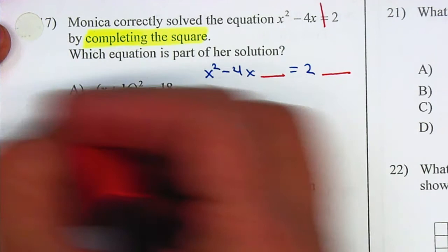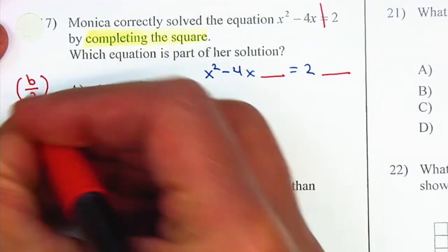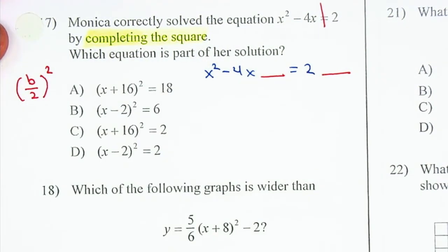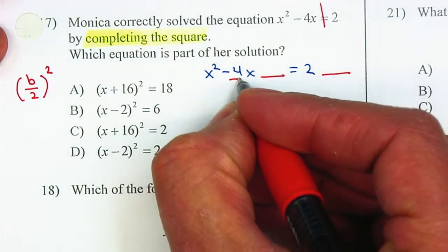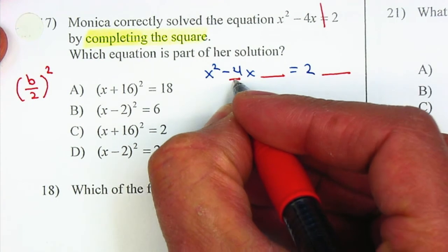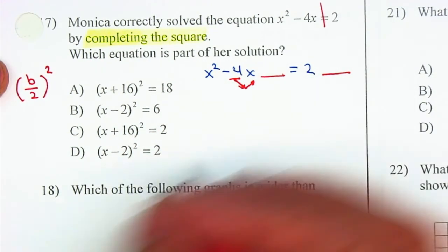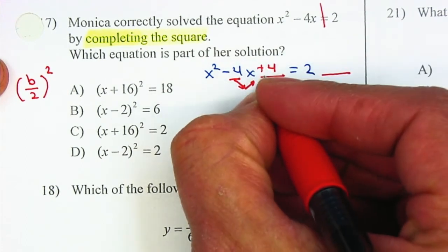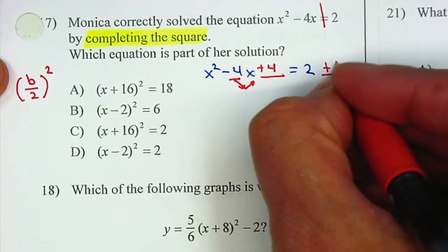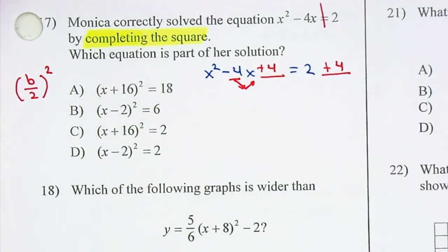The formula for completing the square is b over 2, squared. We can just do it quickly in our head. We just take half of negative 4, which is negative 2, and then we square it. Negative 2 squared is positive 4. Remember, if you add positive 4 here, you need to add a positive 4 on the right. You need to add the same thing on both sides.